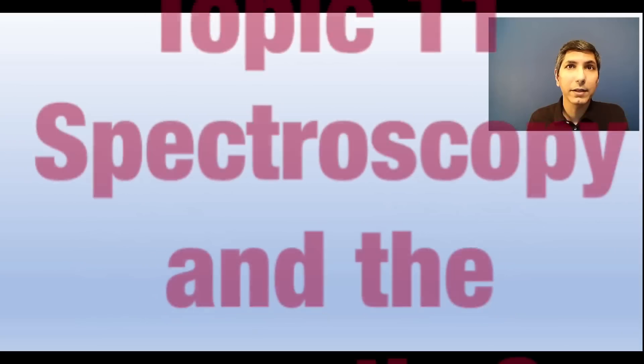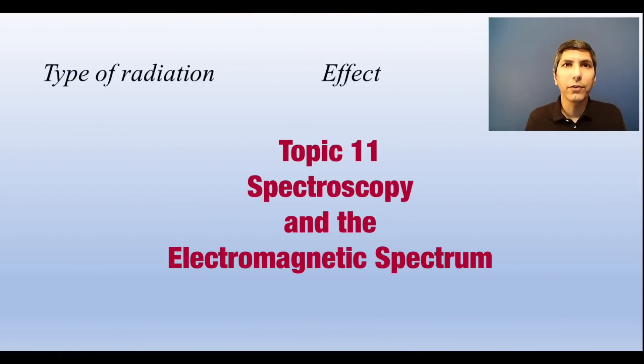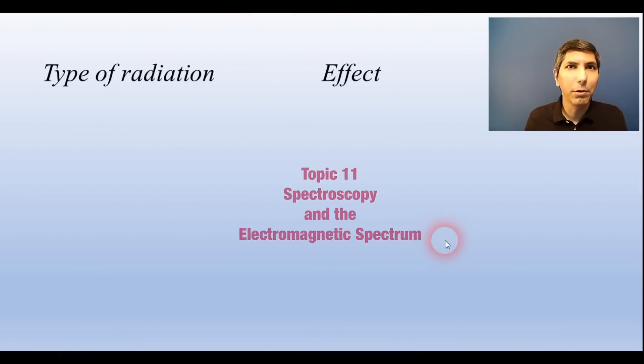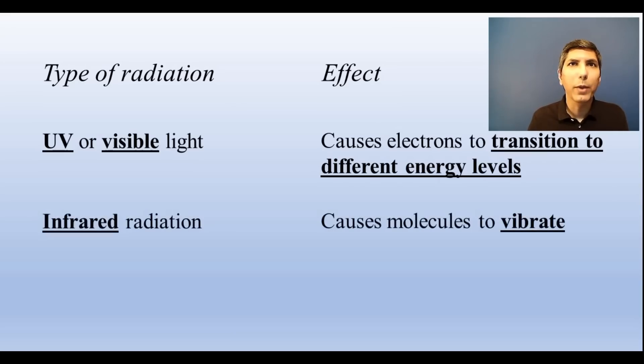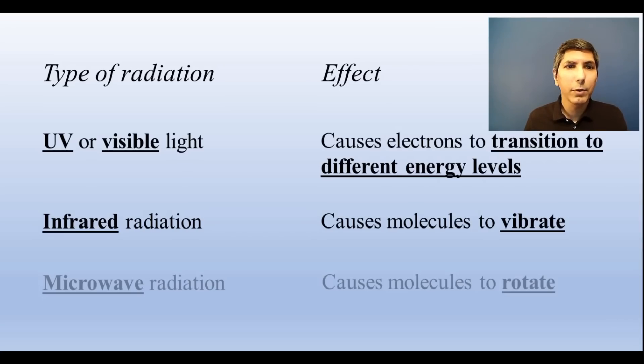Different parts of the electromagnetic spectrum do different things to molecules. For example, ultraviolet or visible light can cause an atom's electrons to transition to different energy levels. If you see the phrase infrared radiation in the question, it likely wants you to realize that the molecule is undergoing vibrations at those frequencies. And finally, if the question mentions microwave radiation, you need to associate that with rotation of molecules.